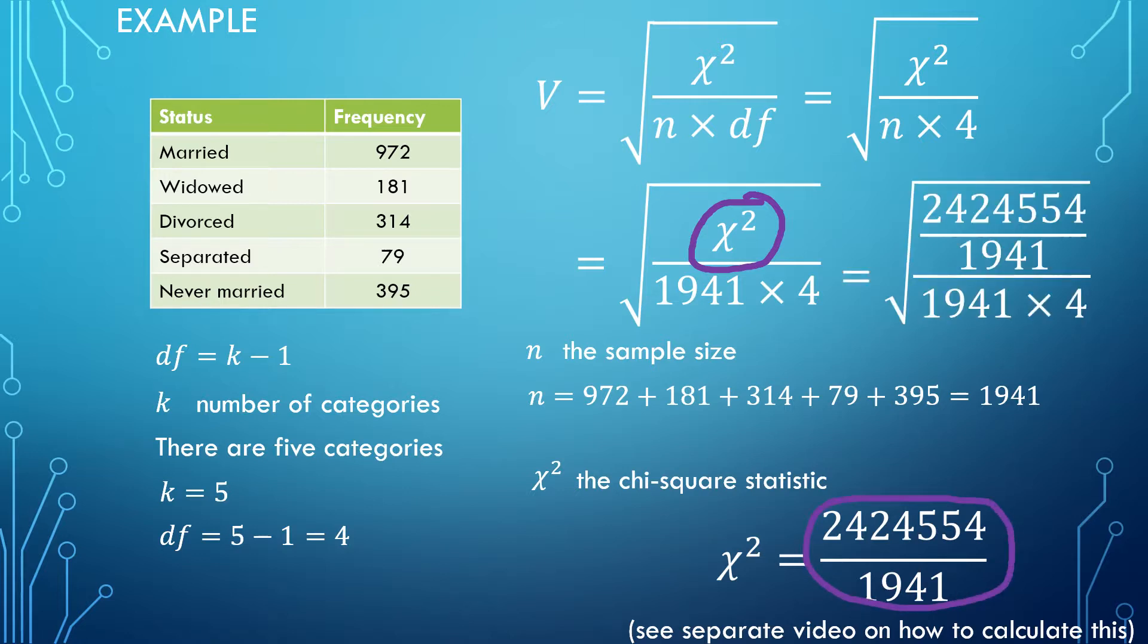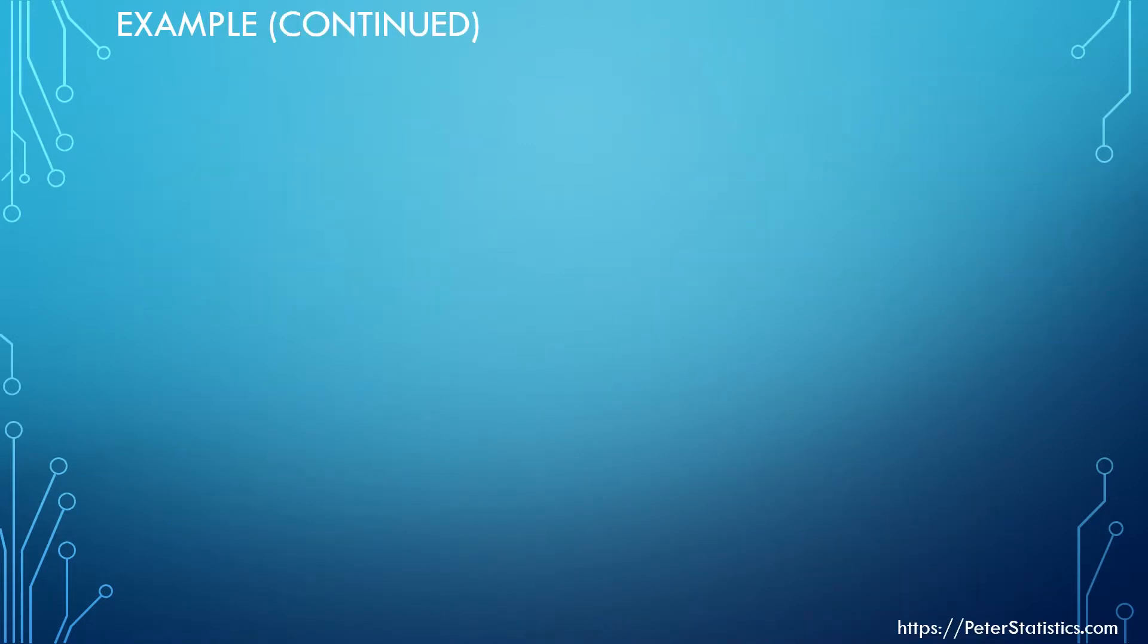Finally, we get this, and this would be our Cramér's V. Next, I'll show you how to simplify this or use a calculator to calculate it straight away. On the previous slide we ended with this big formula. If you don't want to simplify this any further and simply calculate this in the calculator, that's fine, you can stop here. But let's have a look.